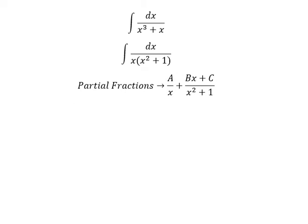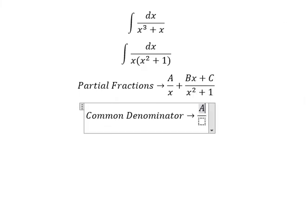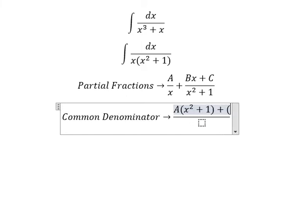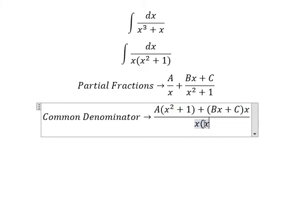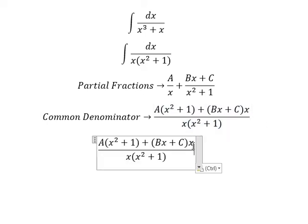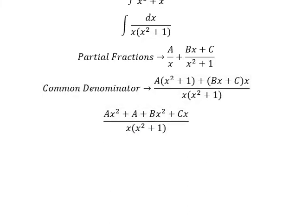Now we do common denominator. So A multiplied by x squared plus one, B x plus C multiplied by x. Now we need to expand. Now we need to arrange based on the term of x.